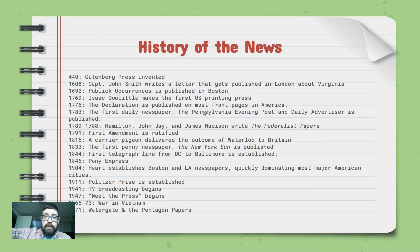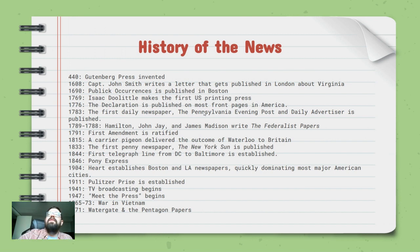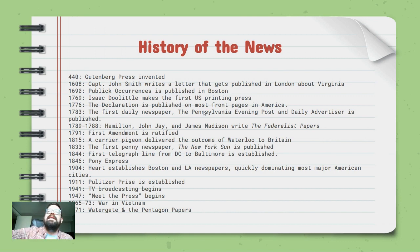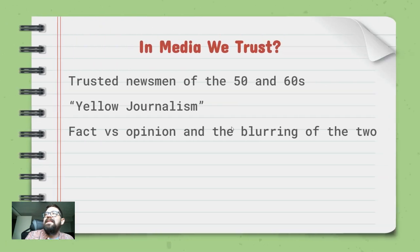In 1947, Meet the Press airs on NBC, where journalists interview politicians — that show is still on today, making it one of the longest-running shows on TV. The Vietnam War from 1965 to 1973 greatly changed how TV journalism covered war and shaped the relationship between the press, the military, and the audience at home. Then we'll talk about Watergate and the Pentagon Papers — huge moments for journalism.